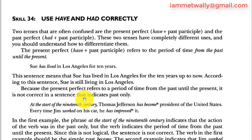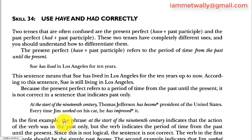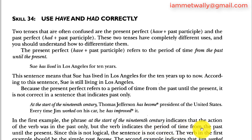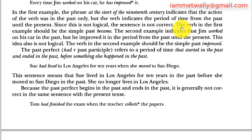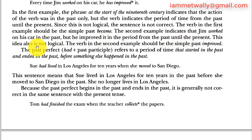It is not correct to use the present perfect in a sentence that indicates the past only. For example: 'At the start of the 19th century, Thomas Jefferson has become president of the United States.' The phrase 'at the start of the 19th century' indicates the action was in the past only, but the verb indicates a period from the past until the present — this is not logical. The verb should be the simple past: 'became.' Similarly, 'Every time Jim worked on his car, he has improved it' is also not logical; the verb should be the simple past 'improved.'